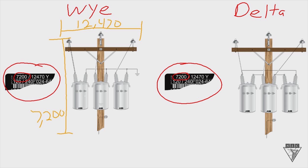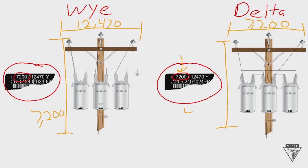Let's move over to the right-hand side to our delta connection. The delta primary connection rule reads: if the primary coil voltage matches the phase-to-phase voltage of the system, make a delta connection. If we had a phase-to-phase voltage of 7,200 volts, then we would make a delta connection because that would give us the rating of our primary coil. In this example, this would have a phase-to-ground voltage of 4,160 — definitely too low — so that's why you would hook it up phase-to-phase.